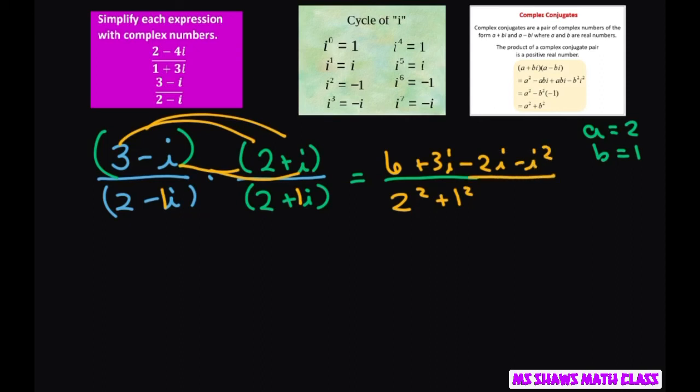All right, so the denominator again, we have 4 plus 1 is 5. We have 6, this part here is i, and then we have minus, and i squared is negative 1, minus a negative 1, so this is going to be positive 1. So 6 plus 1 is 7 plus i divided by 5.